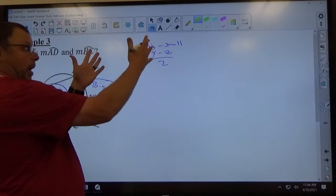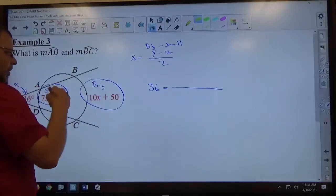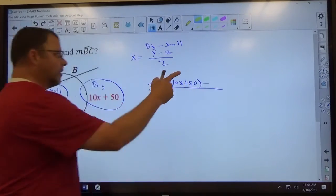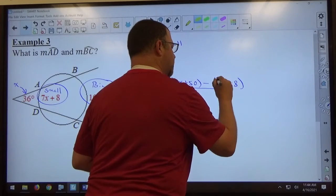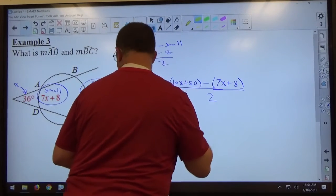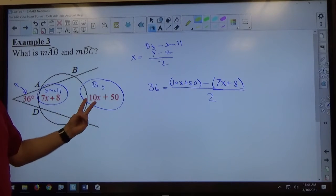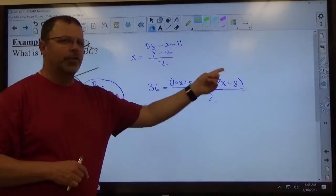So if I fill in what I know, 36 is x equals big arc which is 10x plus 50 minus small arc, which is 7x plus 8 divided by 2. Now be cautious that when you substitute pieces into a formula, if those substitutions are multiple things, always put parentheses around substitutions of multiple things. So 10x plus 50 is two things, I put parentheses around the substitution. 7x plus 8 is multiple things, I put parentheses around the substitution.